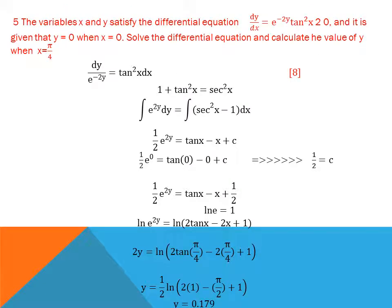Question 5: the variables x and y satisfy the differential equation dy/dx = e^(−2y)·tan²x. It is given that y = 0 when x = 0. Solve the differential equation and calculate the value of y when x = π/4.